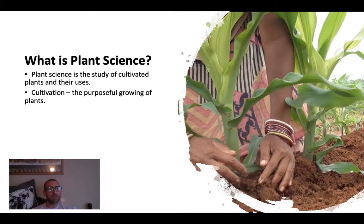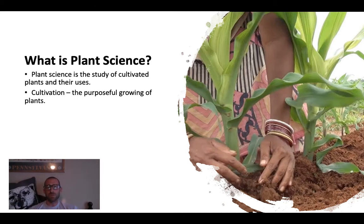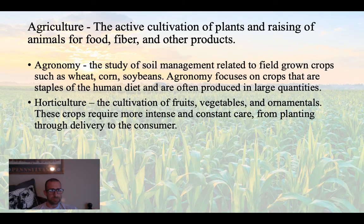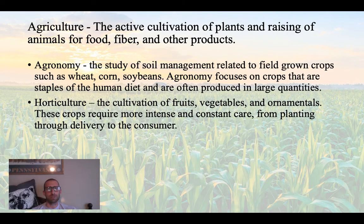When I say 'cultivated' or when I talk about cultivation, what I mean is the purposeful growing of plants. Plant science falls within the larger umbrella of agriculture. When I say agriculture, what I mean is the active cultivation of plants and raising of animals for food, fiber, and other products.